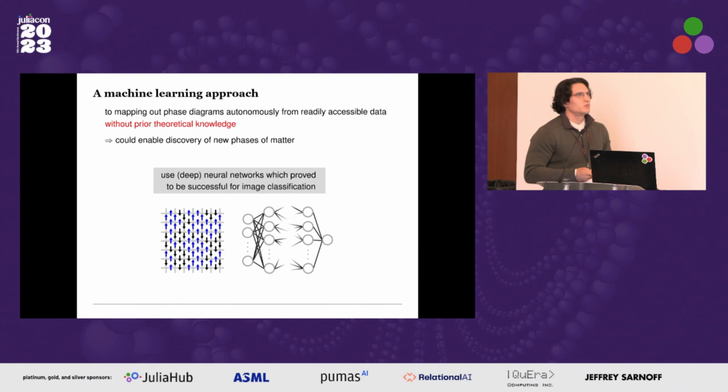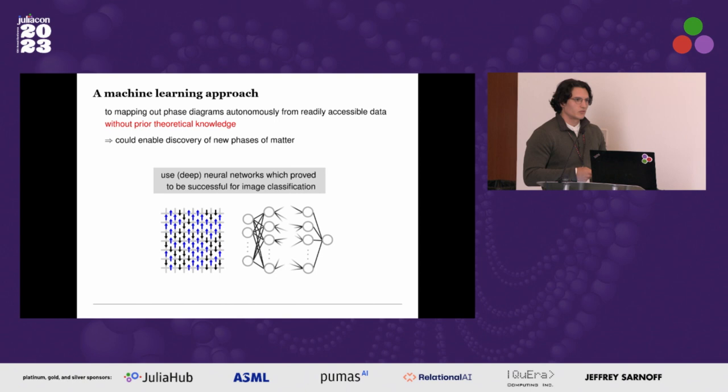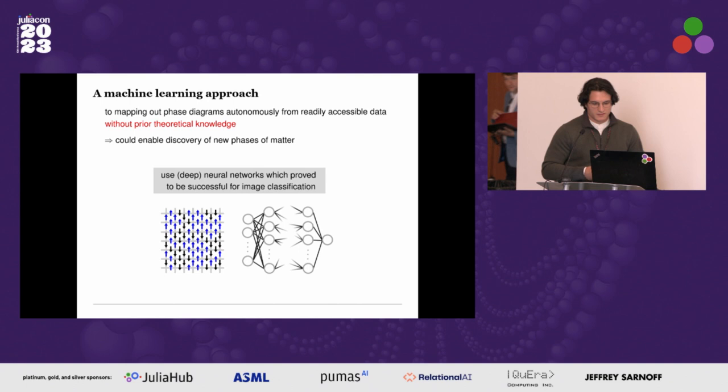We would like to replace the physicist in this process with an approach that is generic — one that does not depend on the details of the system — and would allow us to map out phase diagrams automatically from readily accessible data, be it from numerical simulations or experiments. Because it doesn't depend on prior theoretical knowledge, it could in principle enable the discovery of new phases of matter and identify unexplored phase transitions. Neural networks have had tremendous success in tasks such as image classification, which is why they are the main drivers of this development.